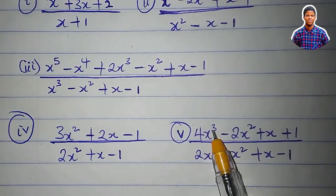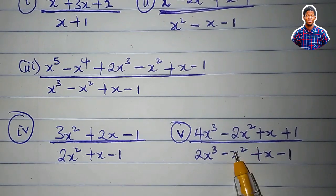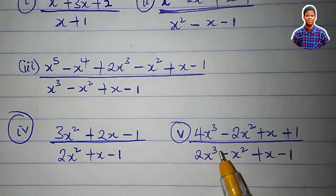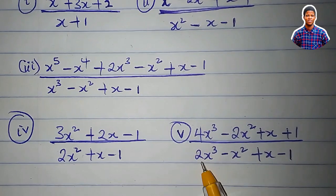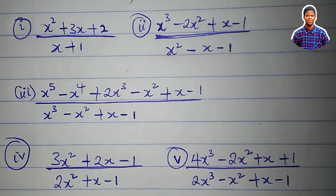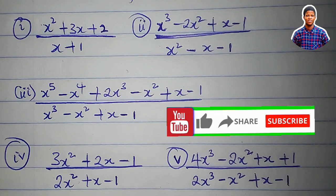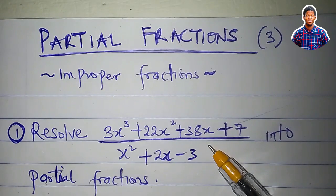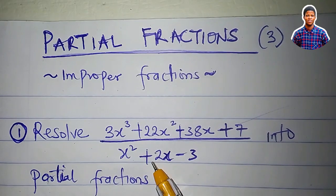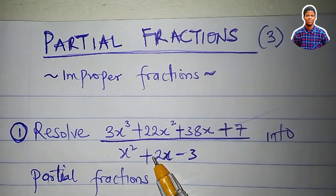The same thing applies to the next example. The numerator has x cubed and the denominator has x cubed — they have the same degree. The coefficient of x cubed in the numerator is 4 and in the denominator is 2. Since 4 is greater than 2, this is an improper fraction. We've now seen examples of improper fractions, so how do we decompose or resolve an improper fraction into partial fractions? We use polynomial long division.